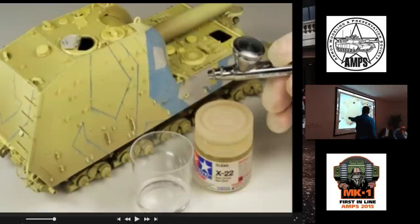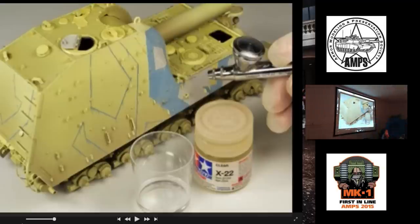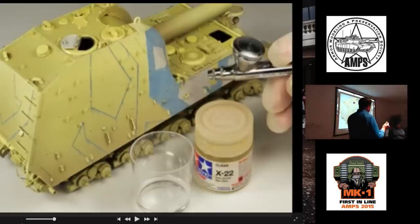Applying a coat of clear over it to give the camouflage colors the same satin finish as the dark yellow base coat. We've applied a gloss coat over it using Tamiya clear.